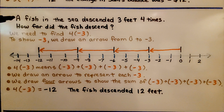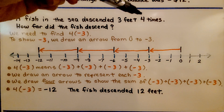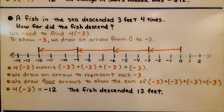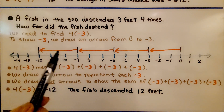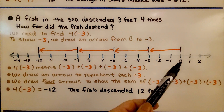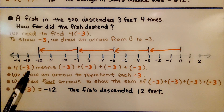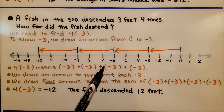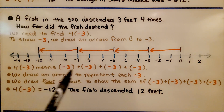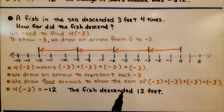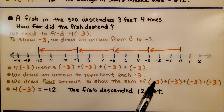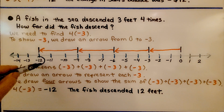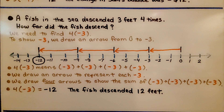A fish in the sea descended three feet four times. How far did the fish descend? We need to find four times negative three. To show negative three, we draw an arrow from zero to negative three. Four times negative three means negative three plus negative three plus negative three plus negative three — it's repeated addition. We draw four arrows, which brings us to negative twelve. The fish descended twelve feet, going lower into the sea.